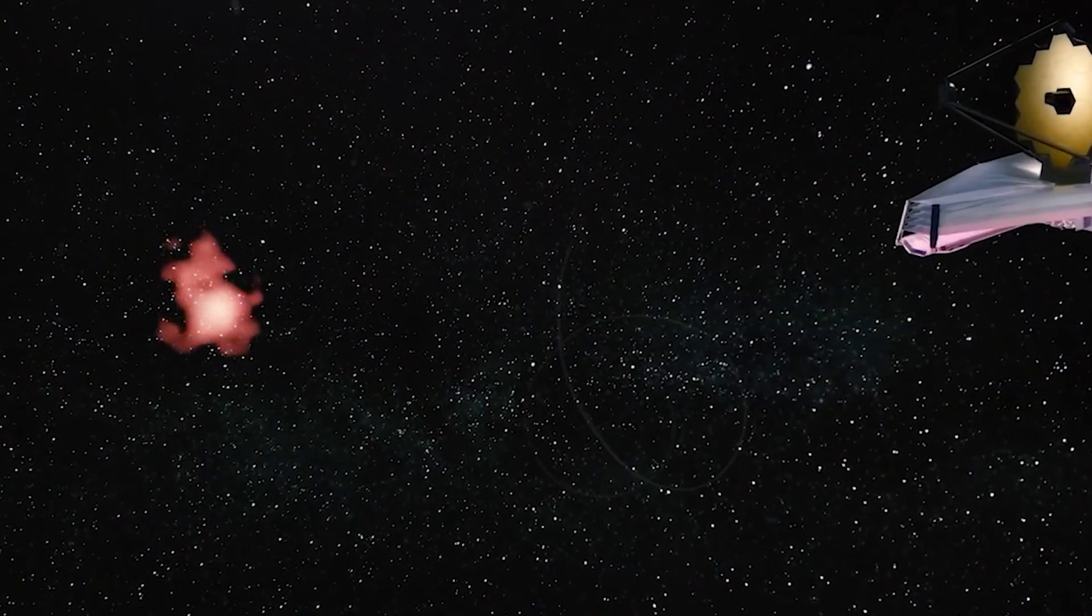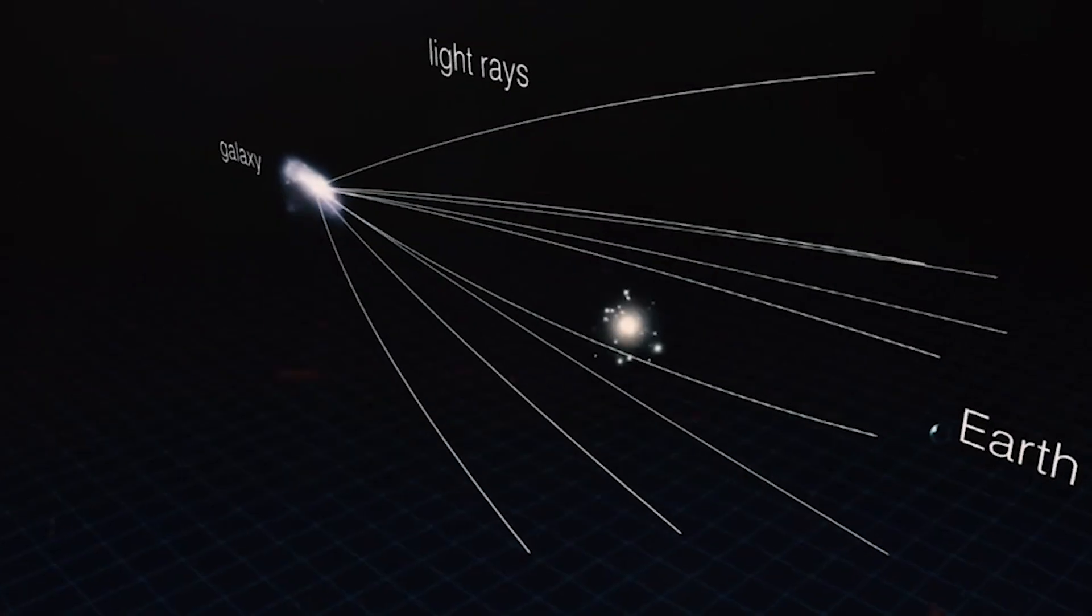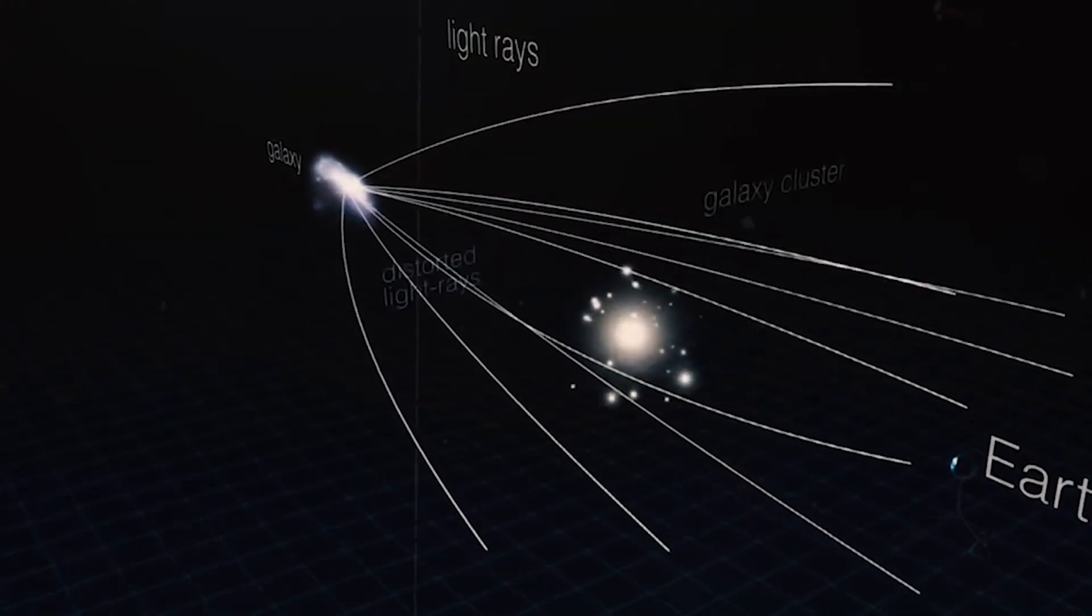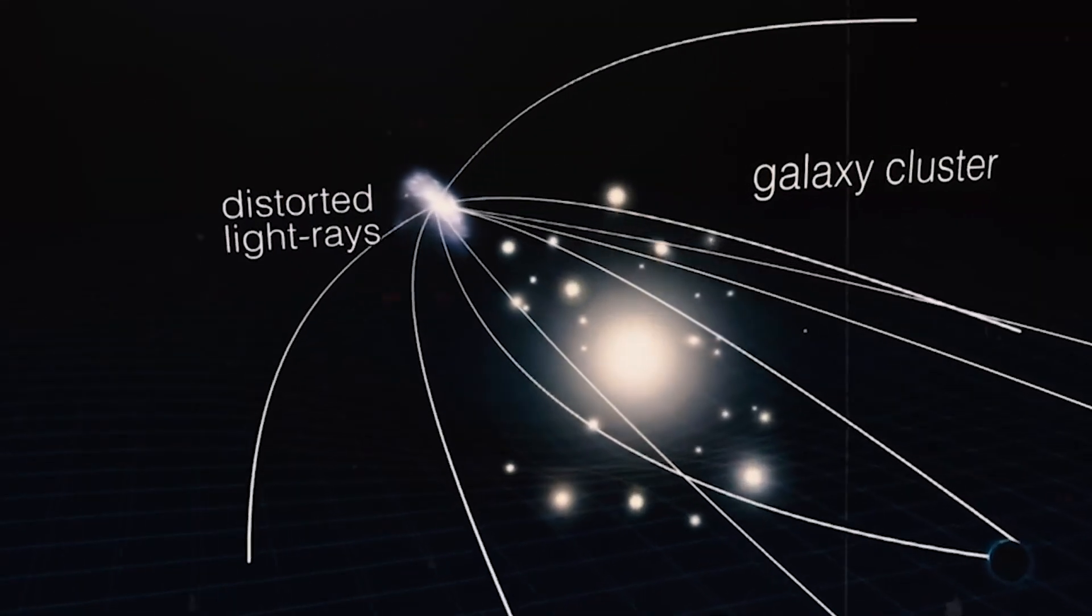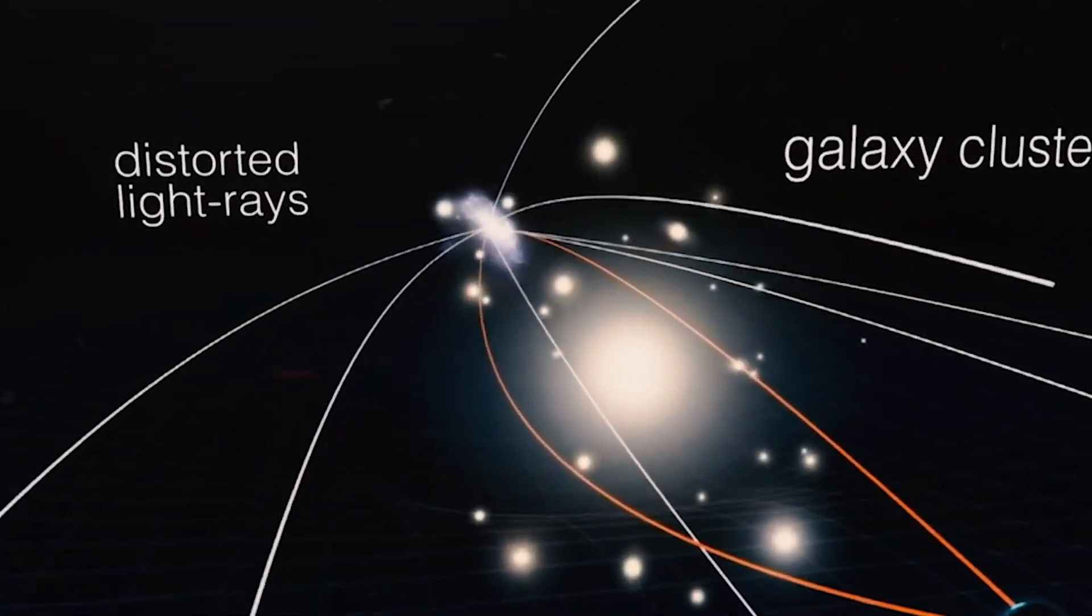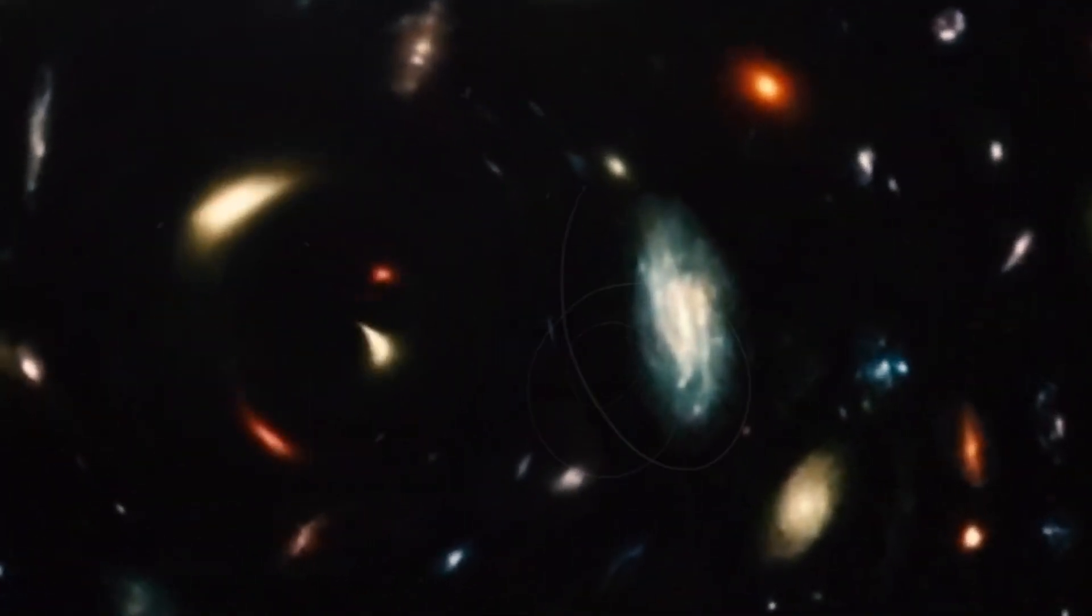The answer is by using the gravitational lensing effect. This is a phenomenon that occurs when the light from a distant object is bent and amplified by the gravity of a massive object in the foreground, such as a galaxy cluster. This creates a distorted and magnified image of the background object, like a cosmic magnifying glass.